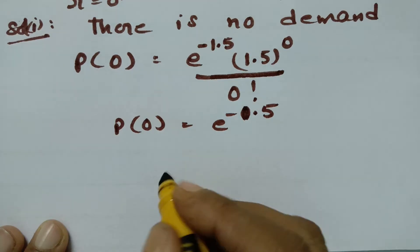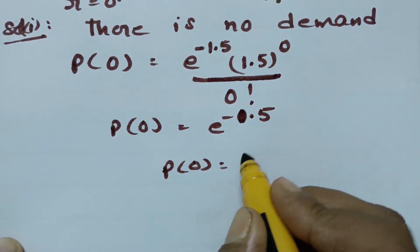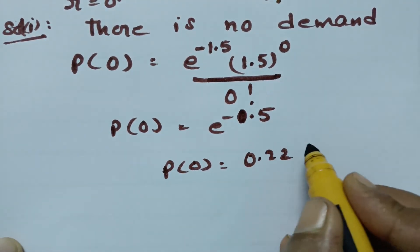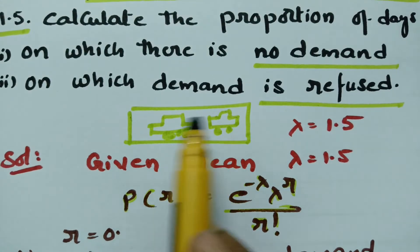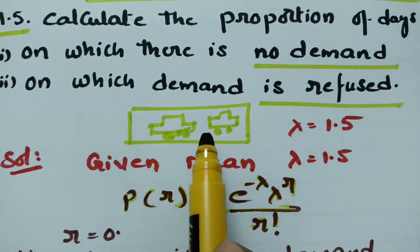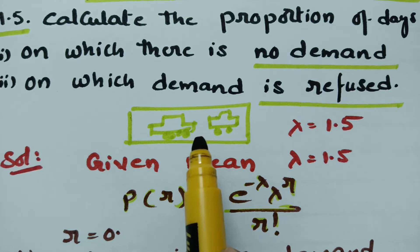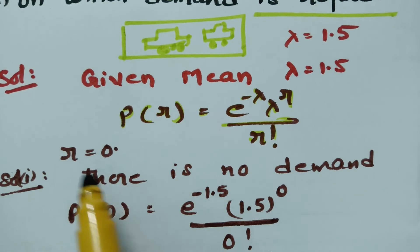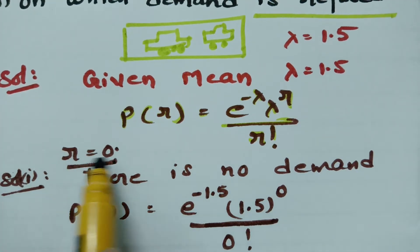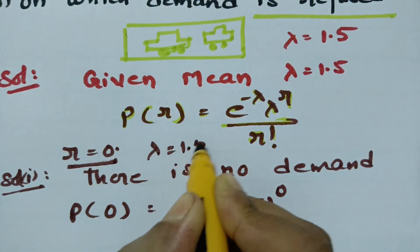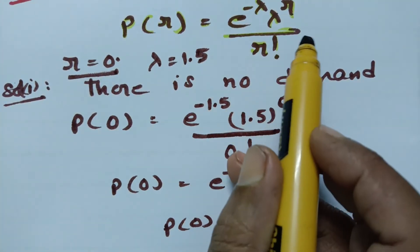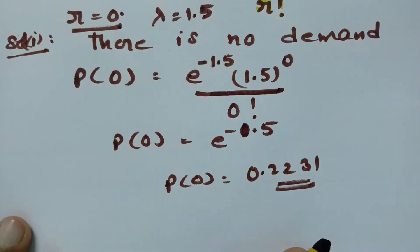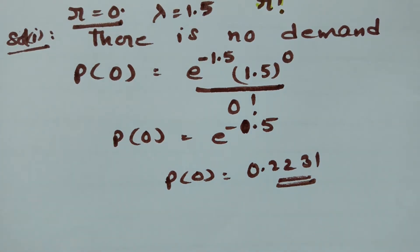The value of e to the power of minus 1.5 is 0.2231. So when there is no demand, the probability is 0.2231. To summarize: with r equal to 0 and lambda equal to 1.5, substituting into the formula e to the power minus lambda times lambda to the power r divided by r factorial gives us 0.2231.